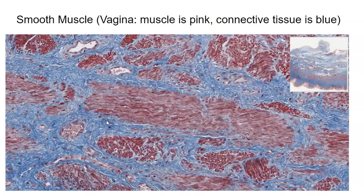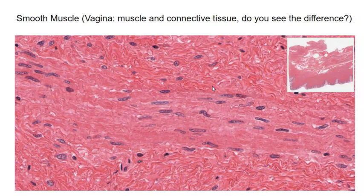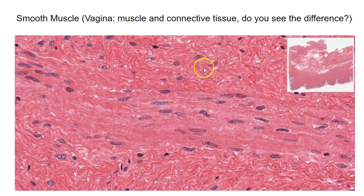Here's smooth muscle from the vaginal wall using a special stain that distinguishes smooth muscle from adjacent connective tissue — the blue areas are connective tissue. With a more familiar stain, the smooth muscle and connective tissue can look similar. The connective tissue appears more red — those are collagen fibers, representing dense irregular connective tissue — while the smooth muscle is the adjacent region. It takes practice to develop an eye for the difference.